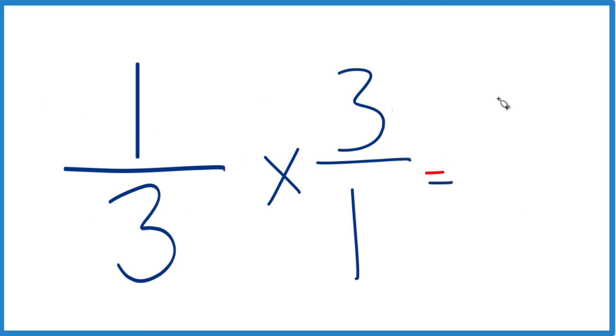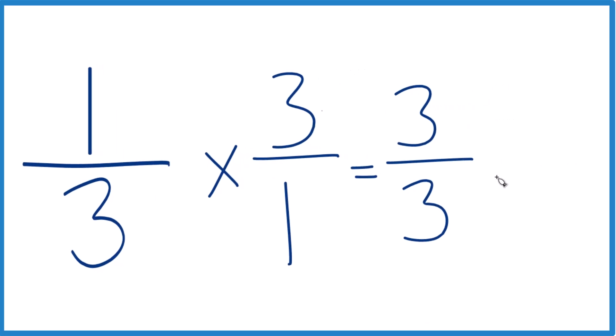So one times three, that equals three, and three times one, that's three, and three divided by three is one, just like we got before.